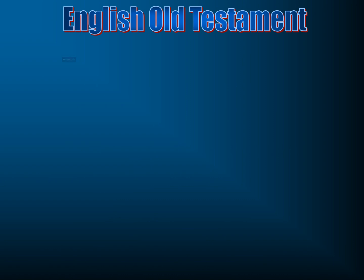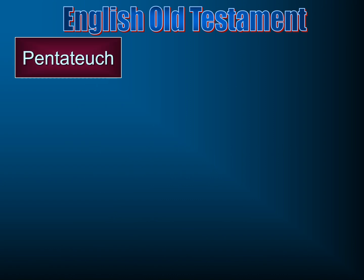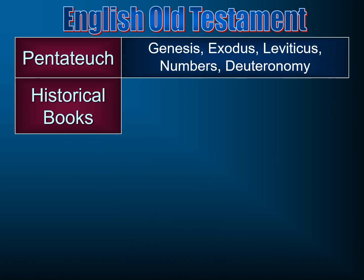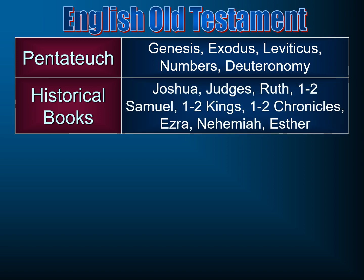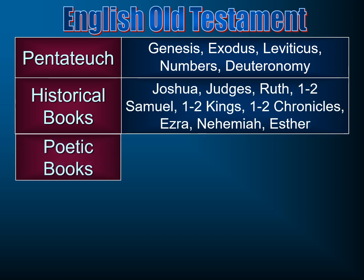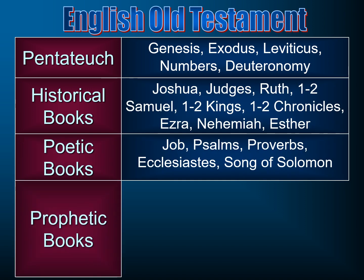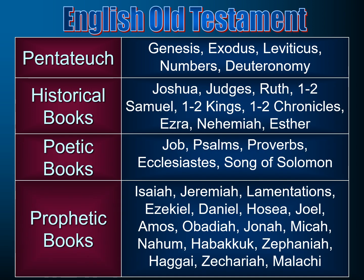If we look at our English Old Testament, of course it begins with the Pentateuch — that's Genesis through Deuteronomy — and then the historical books, Joshua all the way to Esther. Next come the poets, and then finally the prophets. The book of Ruth is one of those books in the historical books, in our English Bible.